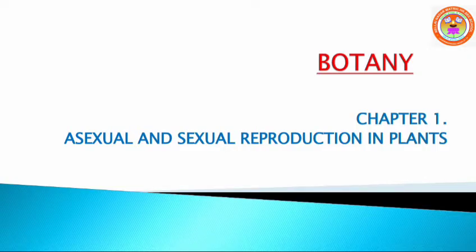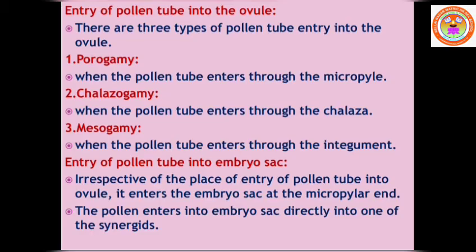Welcome to the Botany Class, Chapter 1: Asexual and Sexual Reproduction in Plants. In today's class we are going to continue with events in fertilization. Last class we stopped at the entry of the pollen tube into the ovule. There are three types of pollen tube entry into the ovule.